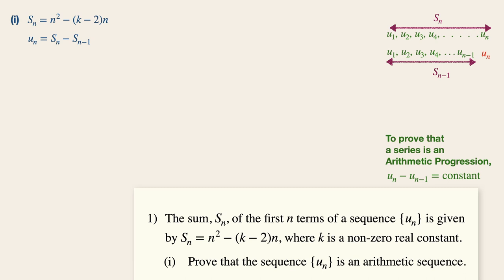Now all we need to do next is to plug in the expression for the sum of the first n terms, which is n squared minus (k - 2)n minus. Let's open a huge bracket now. Now we are going to replace all the n's that you see here with n minus 1. So this will be (n - 1) squared minus (k - 2)(n - 1).